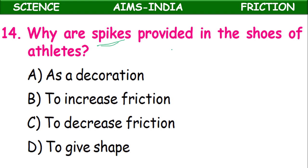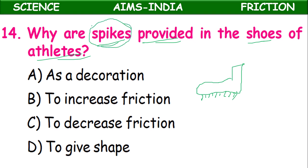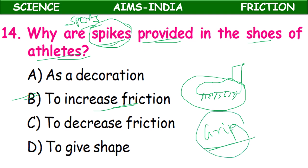Fourteenth question: Why are spikes provided in the shoes of athletes? The bottom part of sport shoes has spikes. Because of these spikes, friction is increased. While running, we get a good grip on the ground so we cannot fall down. Answer: to increase friction.